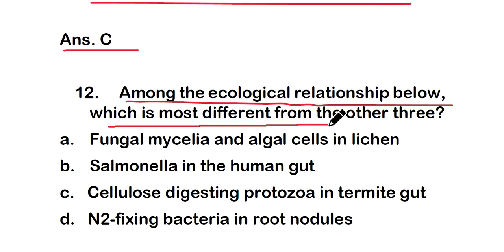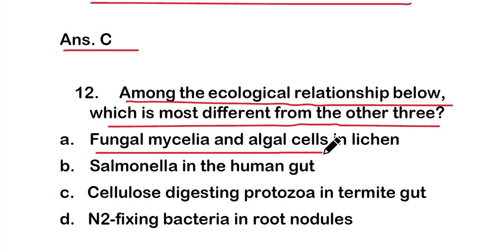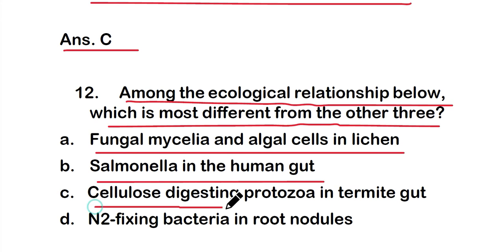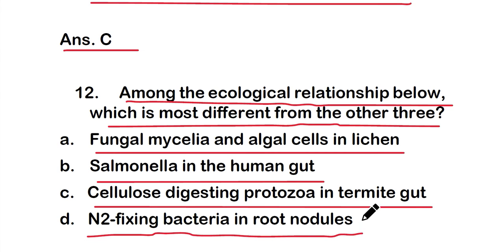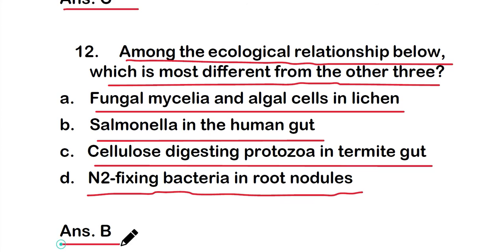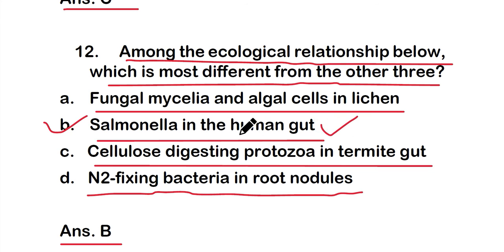Question number twelve: Among the ecological relationships below, which is most different from the other three? Options: option A: fungal mycelia and algal cells in lichen; option B: Salmonella in the human gut; option C: cellulose-digesting protozoa in termite gut; option D: nitrogen-fixing bacteria in root nodules. The right answer is option B — Salmonella in the human gut is most different from the other three ecological relationships.